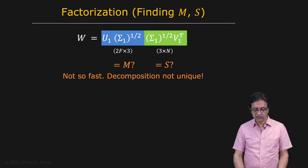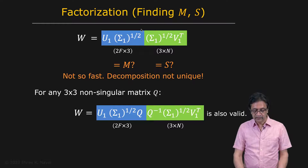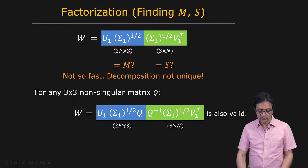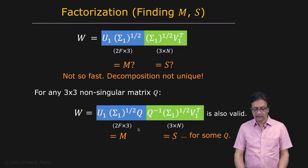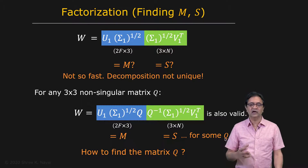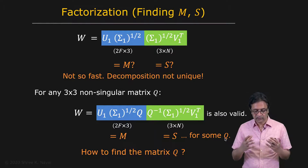This can be shown as follows: if you post-multiply the first factor with any 3 by 3 matrix Q, and pre-multiply the second factor with the inverse of Q, the product is unchanged. So the question of what M and S are becomes: what is the 3 by 3 matrix Q that would yield a valid motion matrix and a valid scene structure matrix? How we compute Q is how we pose the rest of the structure from motion problem.